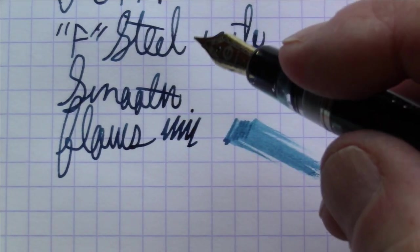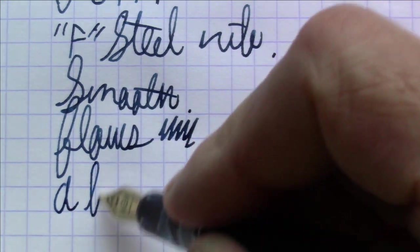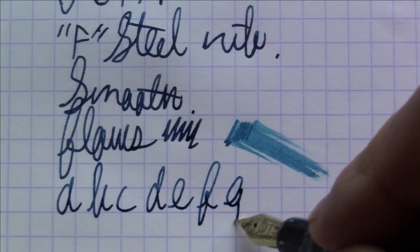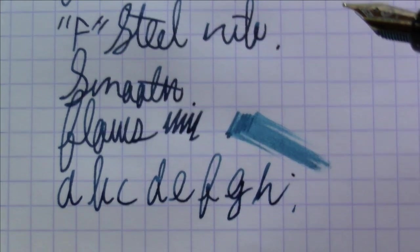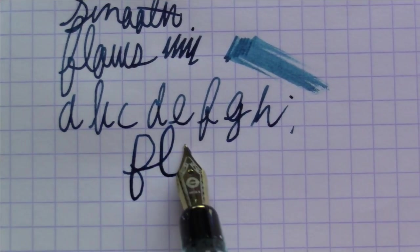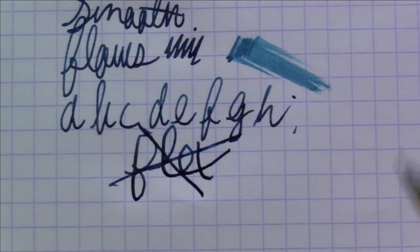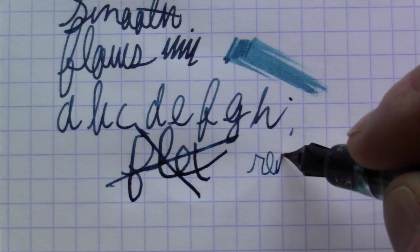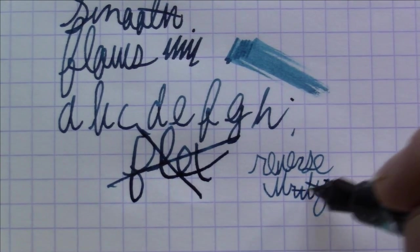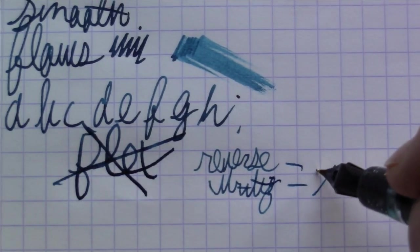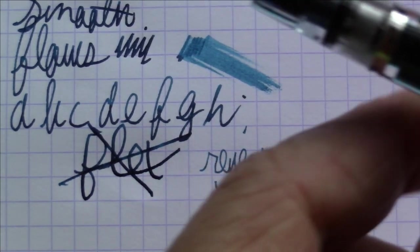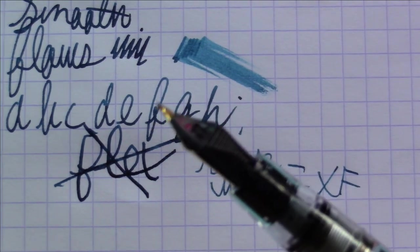Very nice. Not unlike lots of other Wingsung nibs that I have. Probably we're not talking about much, obviously in the way of flex. So no, you're not going to get flex out of this nib. Reverse writing. Not bad, not bad at all. I would say that takes it down to an extra fine. Pretty nice actually. So I'm really liking the way that this writes. I like the transparent feed.